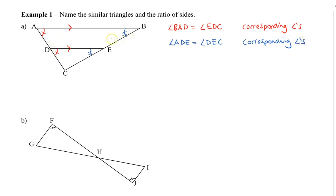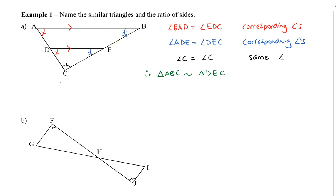Now that we know those two angles are equal, we know that angle C must equal angle C, because angle C is part of the bigger triangle and also part of the smaller one. So we can say angle C equals angle C — it's the same angle. So therefore, triangle ABC is similar to triangle DEC. Remember, we always have to match the angles together. And we can say they're similar because of AAA, which stands for angle-angle-angle.